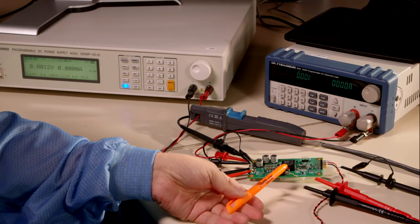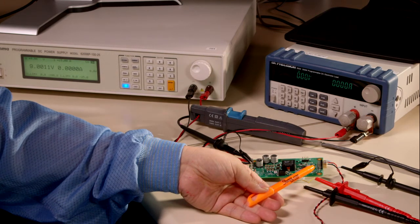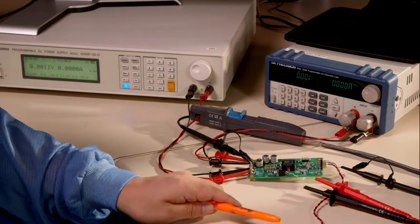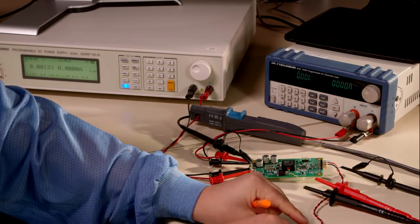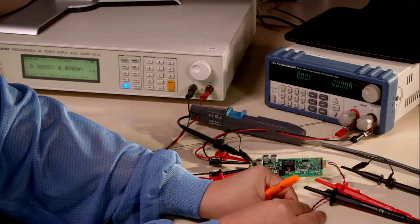The output will increase to the target output voltage as soon as I release the UVLO pull-down switch. And at the same time, I'm going to capture the inrush current.